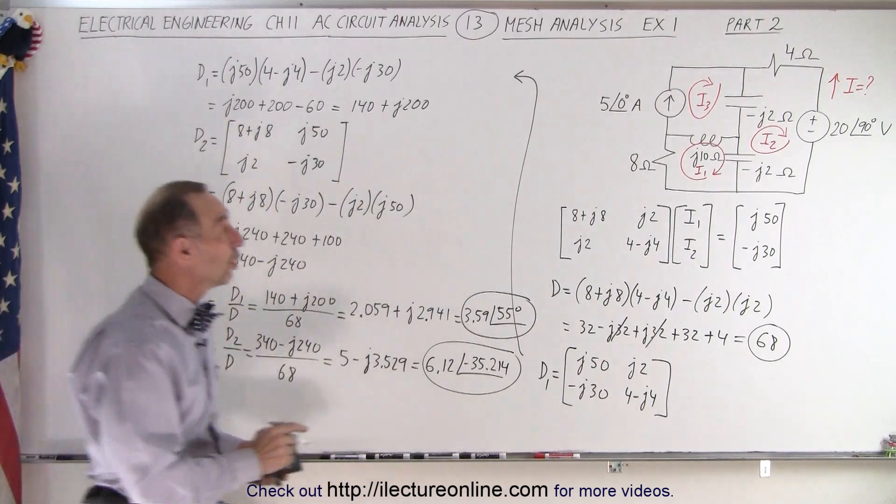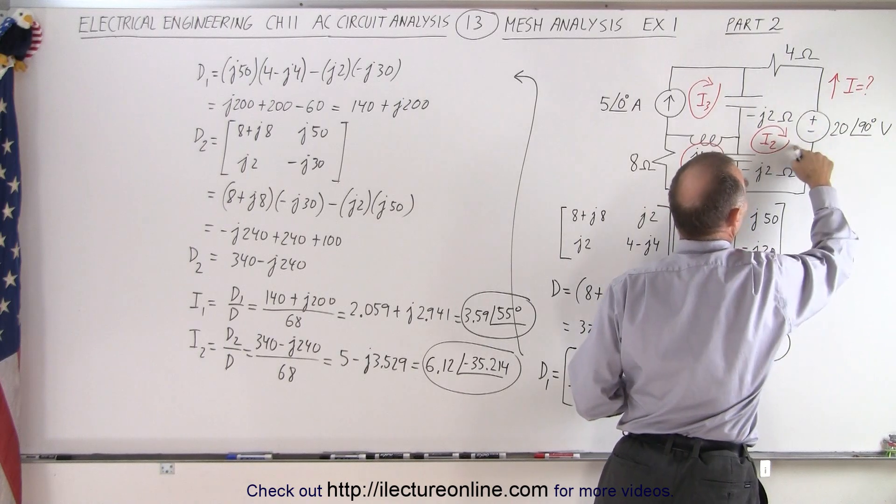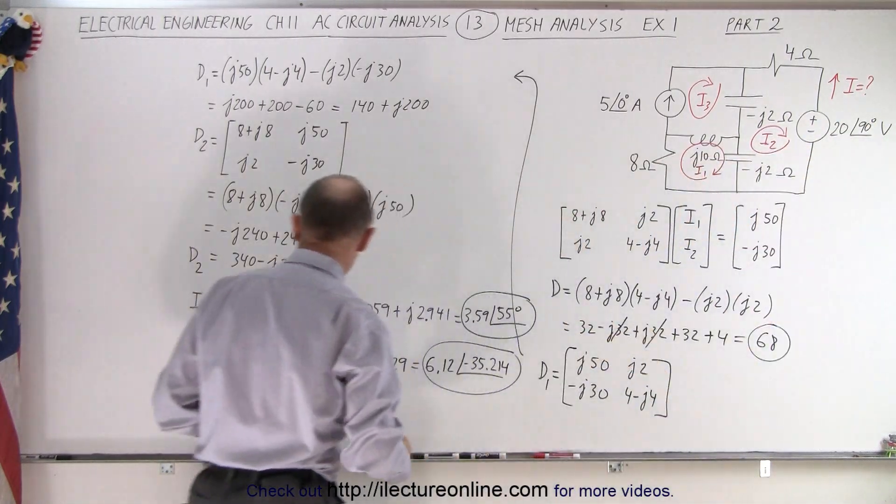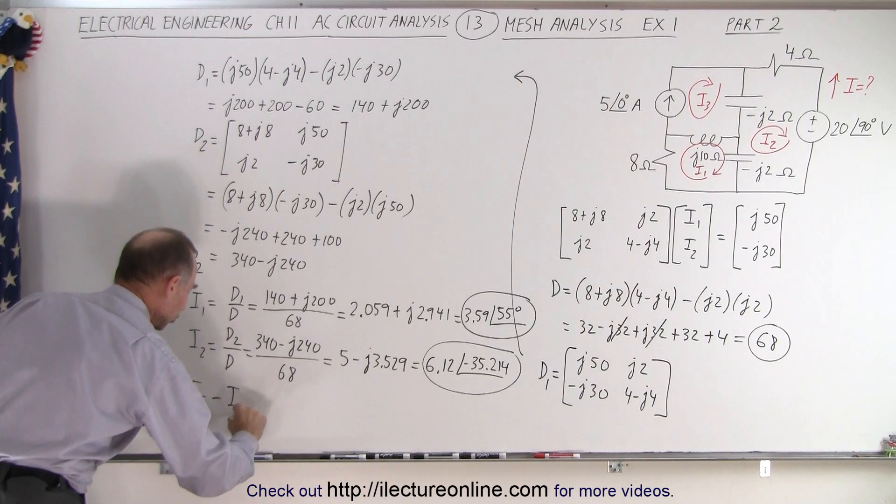Now, the real question is, we're trying to find I right here. And I is in the opposite direction from I2. So what we can say then, is finally, we can say that I is equal to the negative of I2.